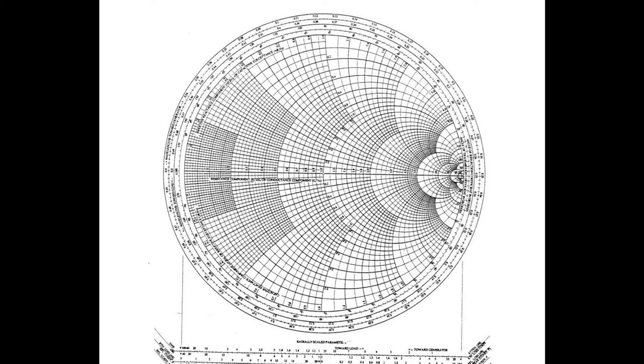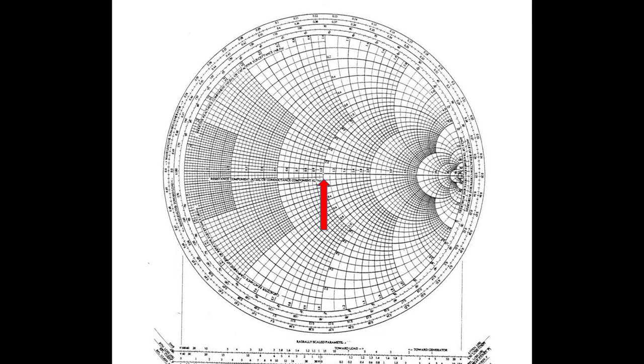VSWR 1 is located at the center of the circle. Suppose your VSWR reading is 1.6. Now keep the pointed tip of the compass at VSWR 1 and stretch the pencil tip up to VSWR 1.6 and draw a circle.